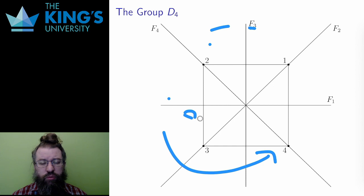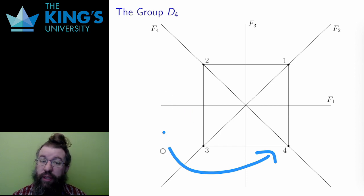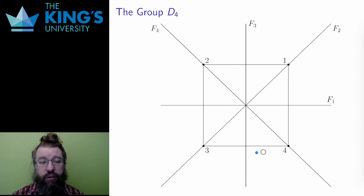You might ask, what about a full turn? That is also a symmetry indeed, but the full turn just sends everything back to itself. A full turn does nothing. So a full turn is just the identity transformation. So we have three rotations and the identity. Four transformations so far.